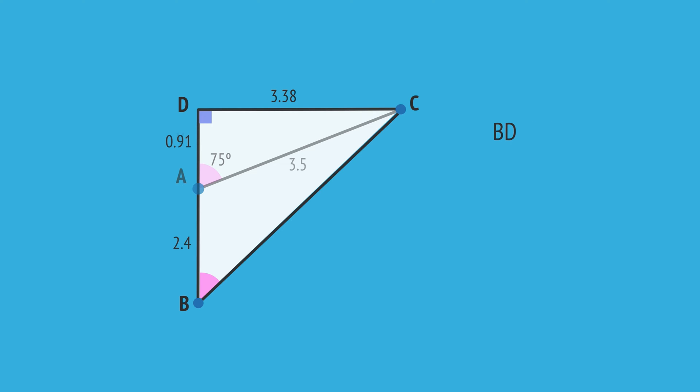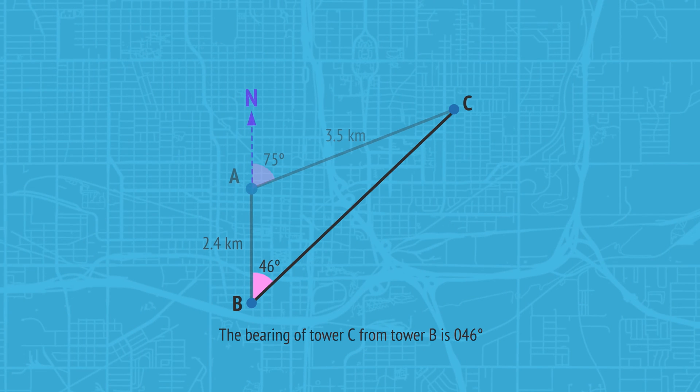We can then focus on triangle BDC. The length BD equals 2.4 plus 0.91, which equals 3.31 kilometers. We can now write the tangent ratio for angle B. The opposite, 3.38, over the adjacent, 3.31. Using the inverse trig function on a calculator gives angle B as 46 degrees. And so the bearing of tower C from tower B is 046 degrees.